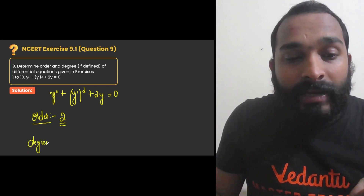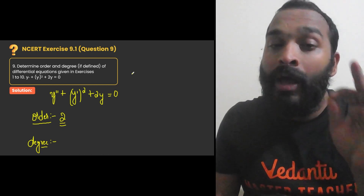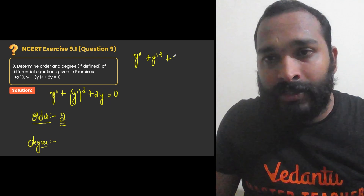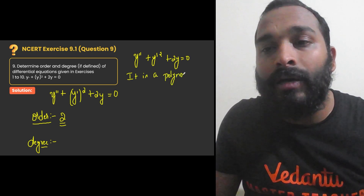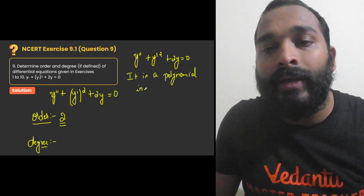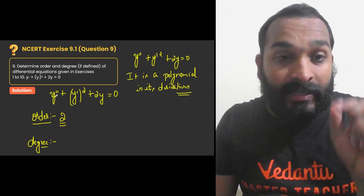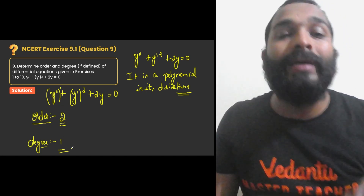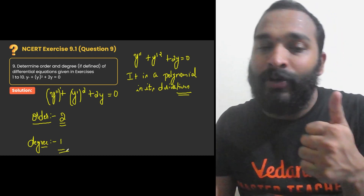When we check the degree, first check whether it is a polynomial in its derivatives. Y double dash plus y dash squared plus 2y — is it a polynomial? Yes, it is a polynomial in its derivatives. So degree is defined. What is the degree? Highest power of the highest order derivative. Highest order is y double dash, and its power is 1. So degree is 1. Order is 2, degree is 1.